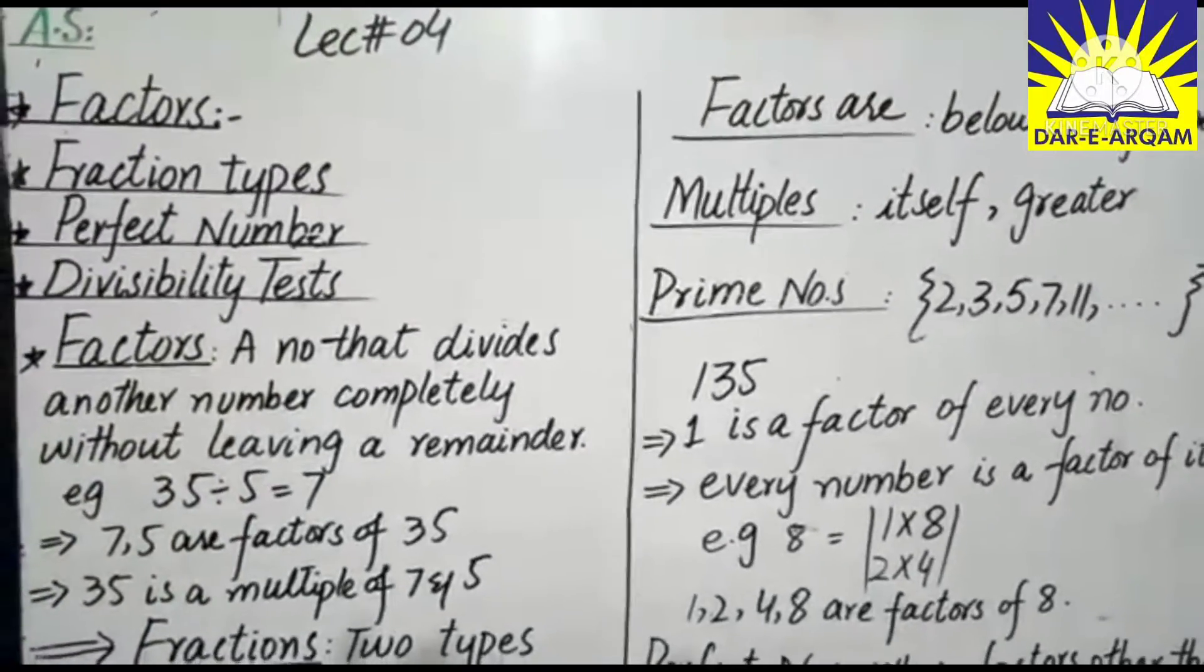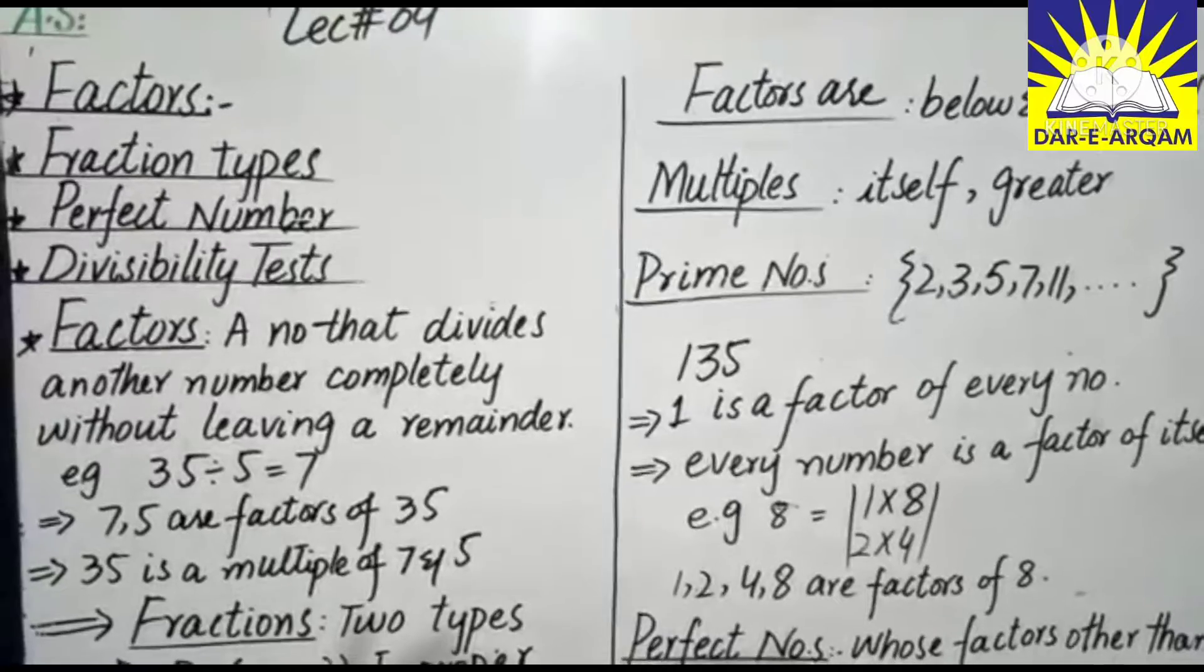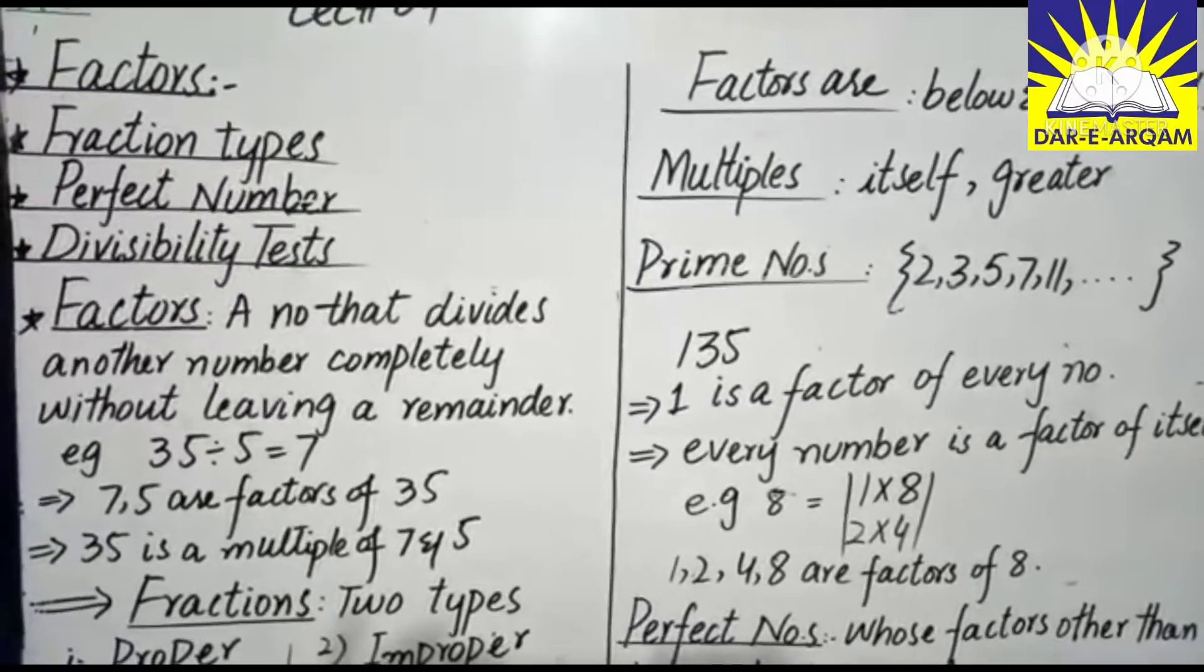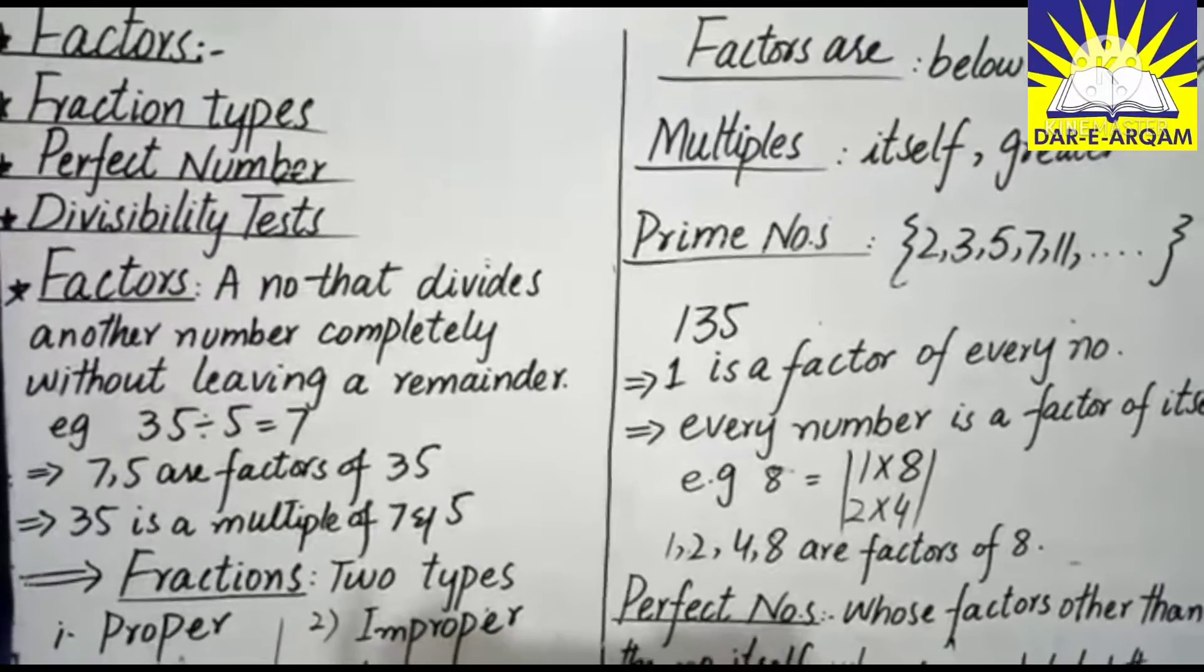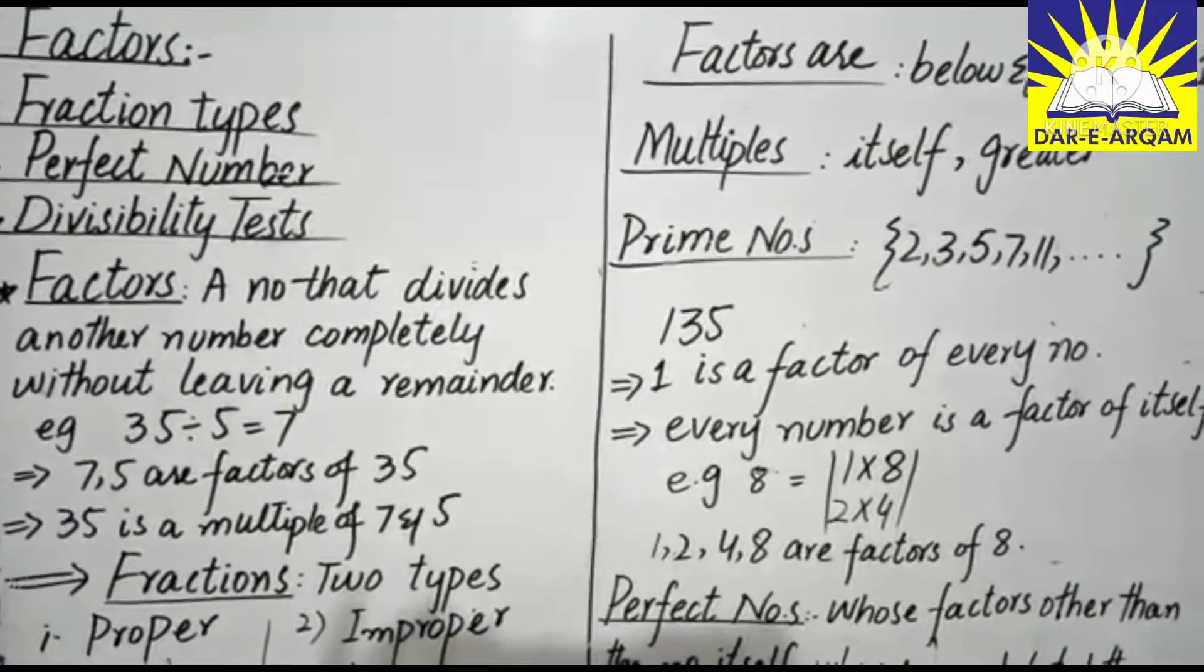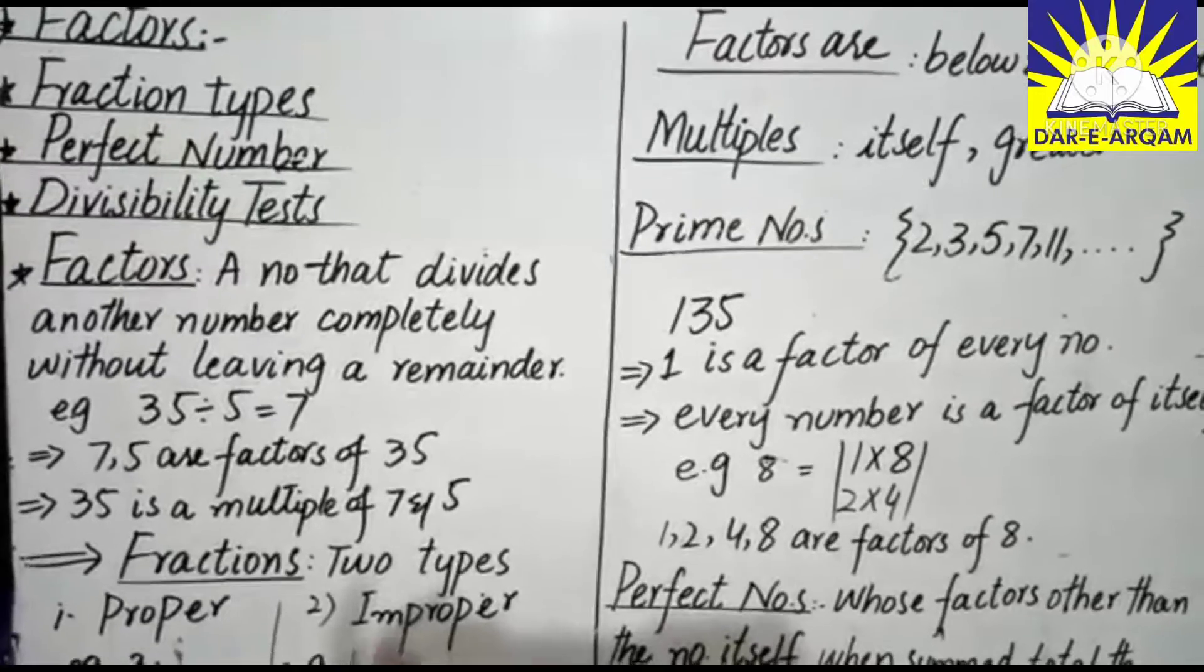First, factors are a number that divides another number completely without leaving a remainder. In which we can say that if we have another number completely divided, the remainder is zero.